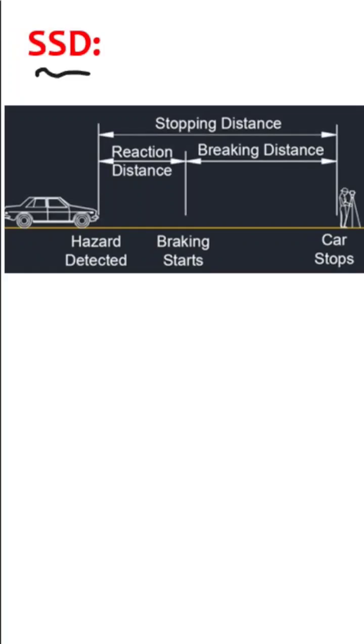SSD, that is nothing but stopping sight distance. It is calculated by using the formula S equals VT plus V squared by 2G into F plus or minus N.